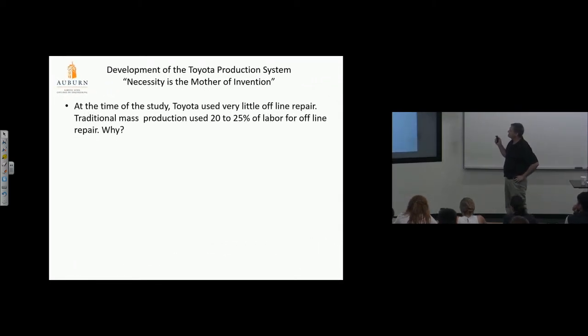At the time of the study, Toyota used very little offline repair. Mass production used 20 to 25 percent of labor for offline repair. I saw this—an awful lot of offline repair. A car goes through the entire process where all the value is added, rolls off the line ready to ship, and 25% of your assembly workforce is fixing it. You see the waste—it's unbelievable. Why? Because they don't build quality in station, they don't have jidoka. They had to push the metal.